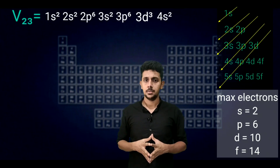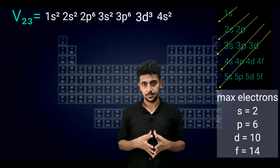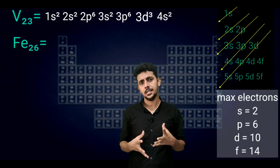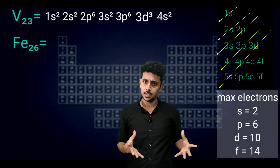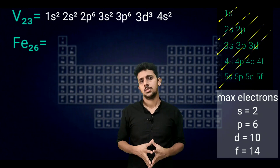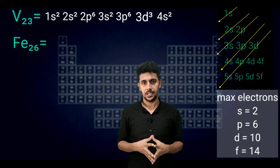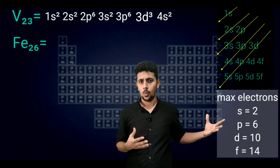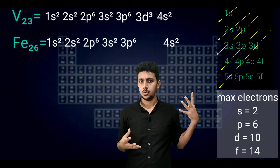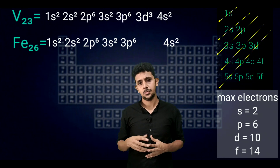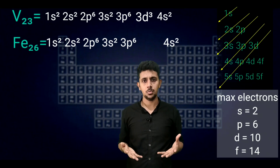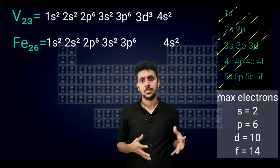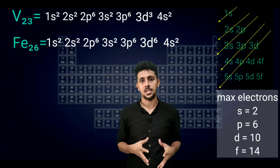Look at another example: iron, atomic number 26. We can write the configuration as 1s2, 2s2, 2p6, 3s2, 3p6, 4s2, 3d6.